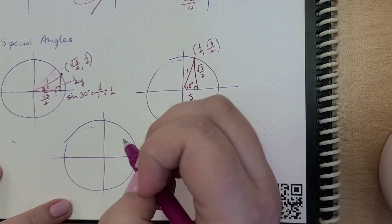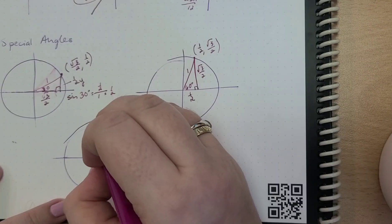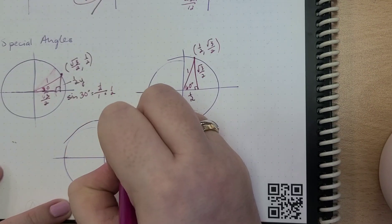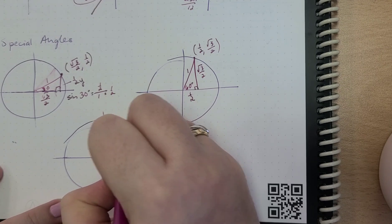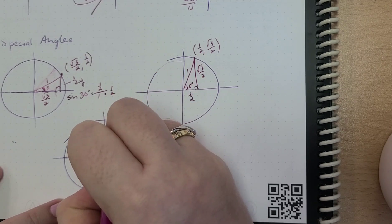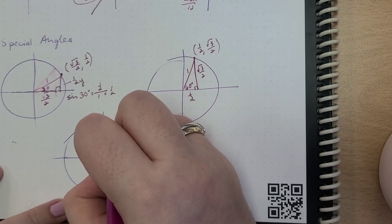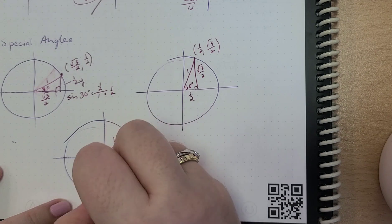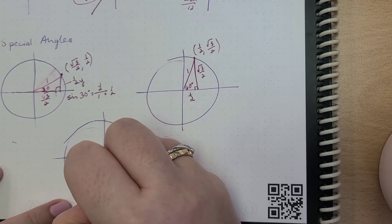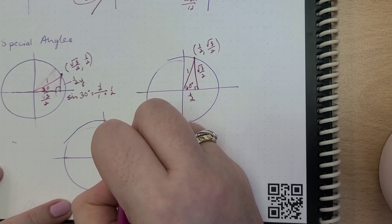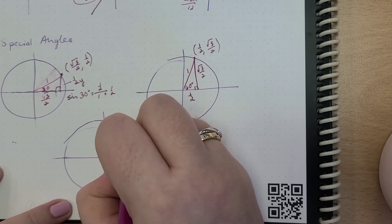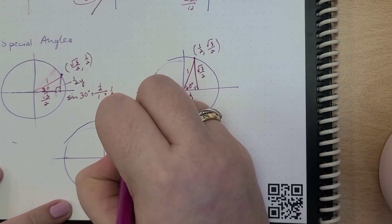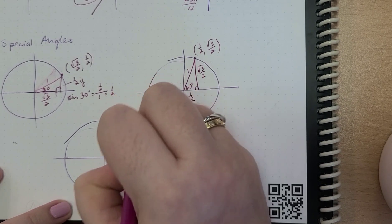We also have our other special triangle, the 45-45-90 triangle. So if we draw that — here, this is 45 degrees. This is one, and this is going to be equal to 1/√2, which we can simplify to √2/2. And this is also 1/√2, which is √2/2. So this point here is (√2/2, √2/2).